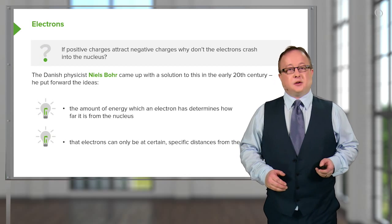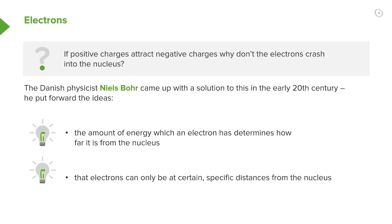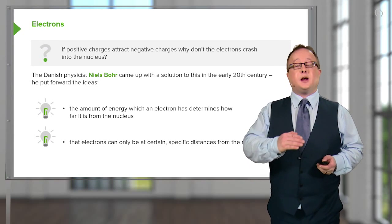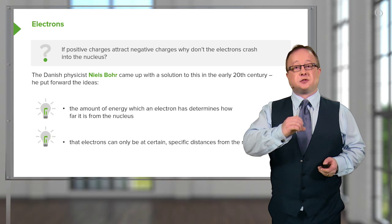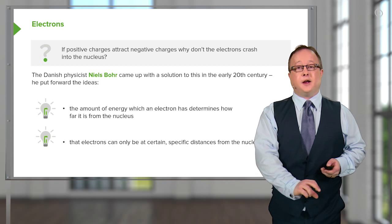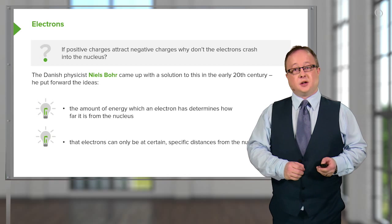Bohr also suggested that electrons could only be at certain specific distances from the nucleus. Whereas the satellite analogy means it could technically exist at a number of different altitudes away from the Earth, in this case we are saying that quantized energy means that electrons could only exist at certain discrete distances away from the nucleus of an atom.